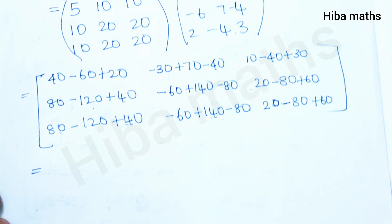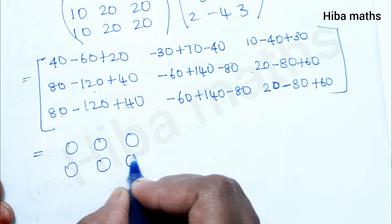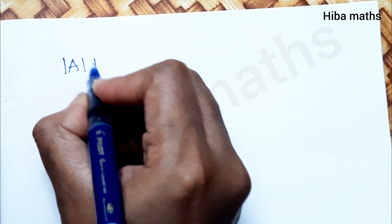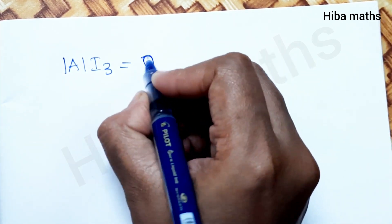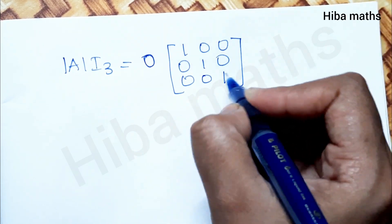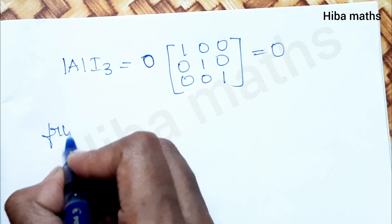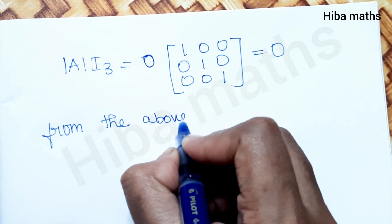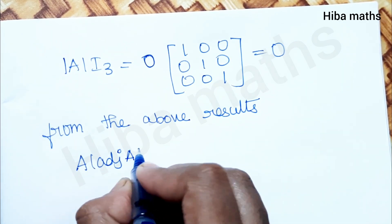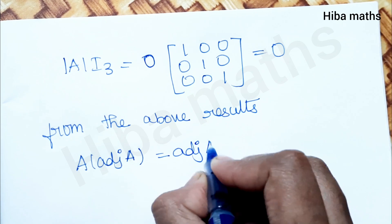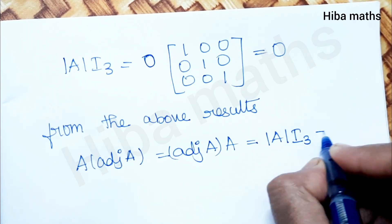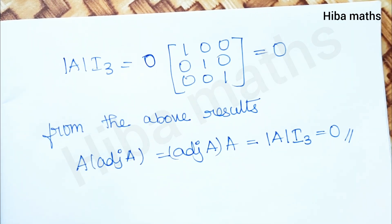So every term is 0, giving the zero matrix. Also, modulus of A into I₃ equals 0 into I₃, which is also the zero matrix. From the above results: A into adjoint of A is equal to adjoint of A into A is equal to modulus of A into I₃, which equals 0. Hence the result is verified. Thank you so much for watching.